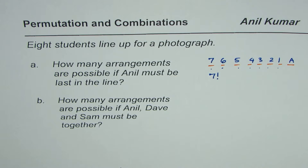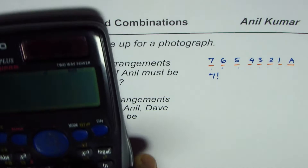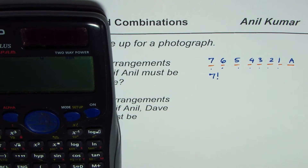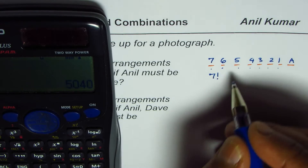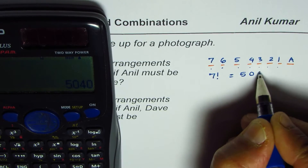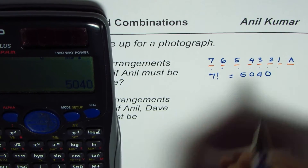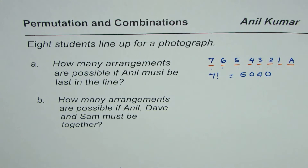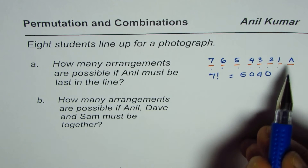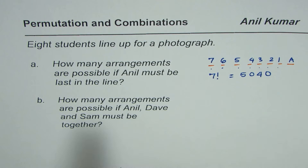You can always calculate seven factorial and write down the number. Seven factorial equals 5040. So these are the total number of arrangements which are possible with Anil at the end.